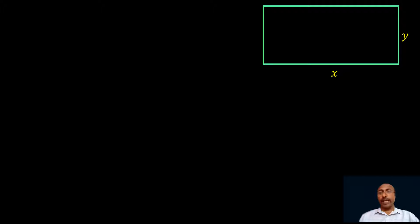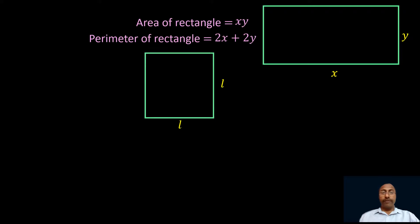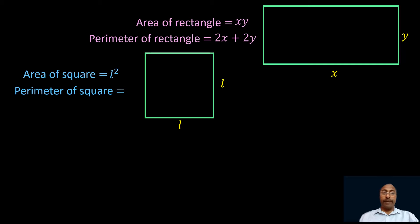This is a rectangle whose length is x and breadth is y. We know the area of this rectangle is length into breadth, that is x into y, which equals xy. The perimeter of the rectangle is twice the sum of length and breadth, that is 2x plus 2y. If we take a square of side L, then its area is L square, and its perimeter is 4L.